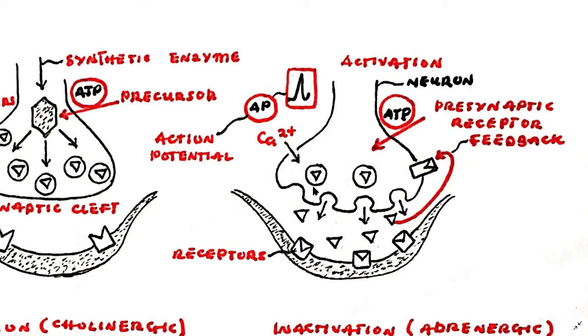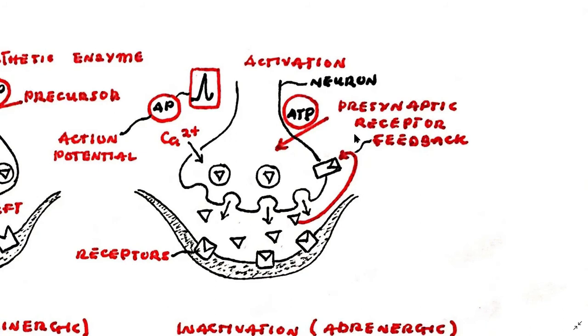Fusion of vesicles with the membrane and the release of neurotransmitter occurs. The neurotransmitter then binds to post-synaptic receptors and activates the response. Neurotransmitter release can be suppressed by feedback onto the presynaptic inhibitory receptors, for example the alpha-2 receptors for adrenergic synapses.